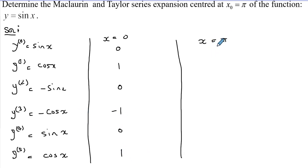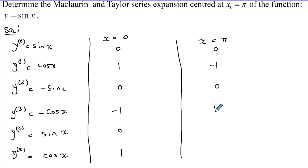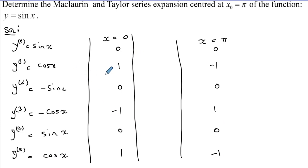On the other hand, evaluating at x = π: sine(π) = 0, cos(π) = −1, then 0, then −1 — for cos with minus one we get 1, and then 0, then −1. Those are the values evaluated at π.